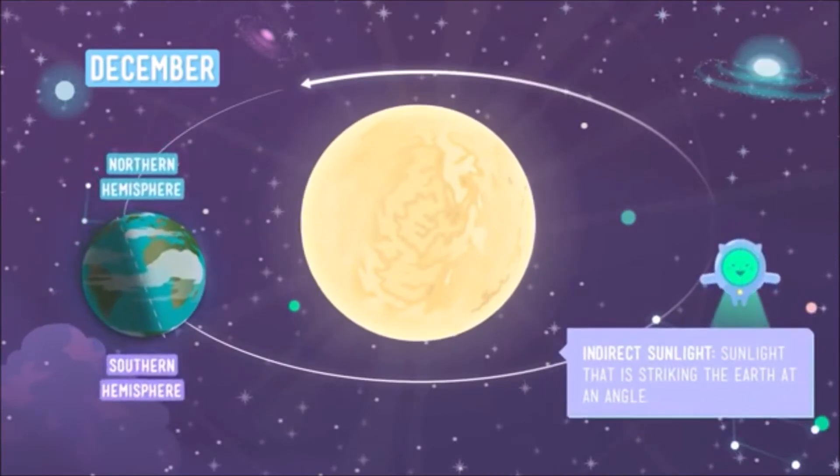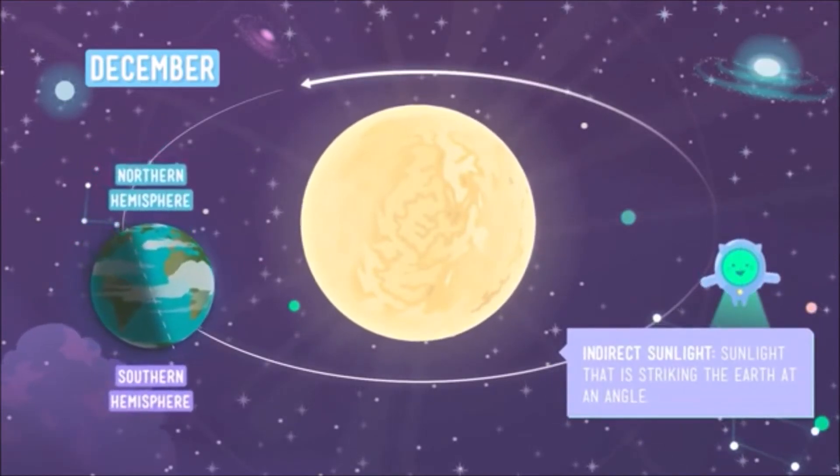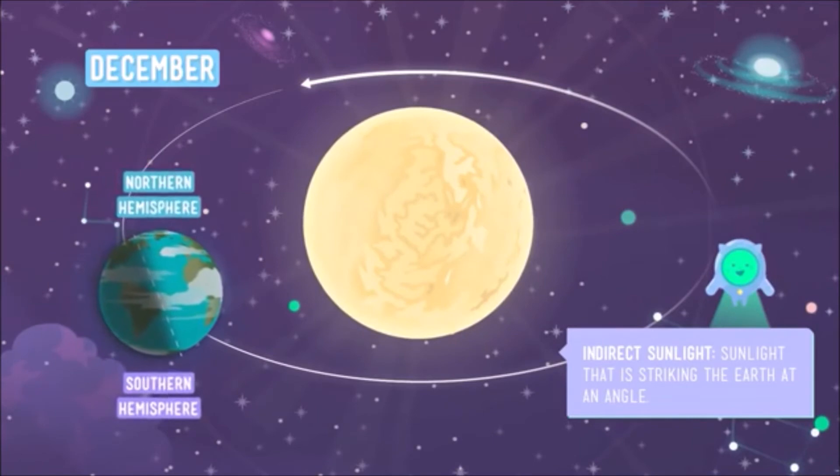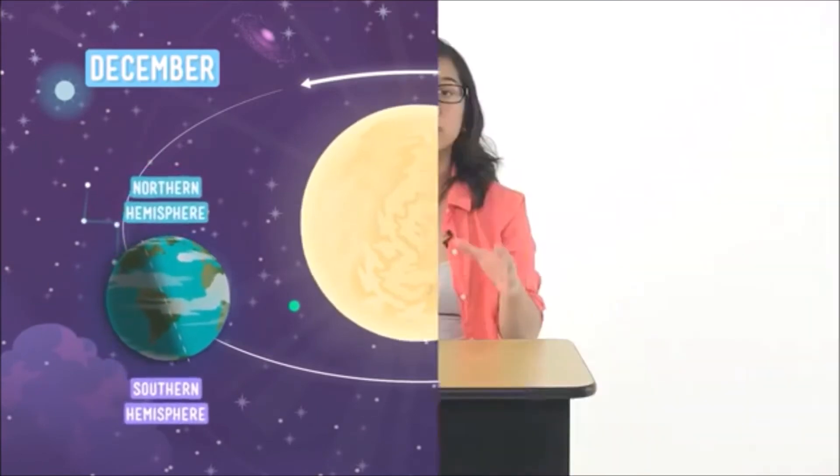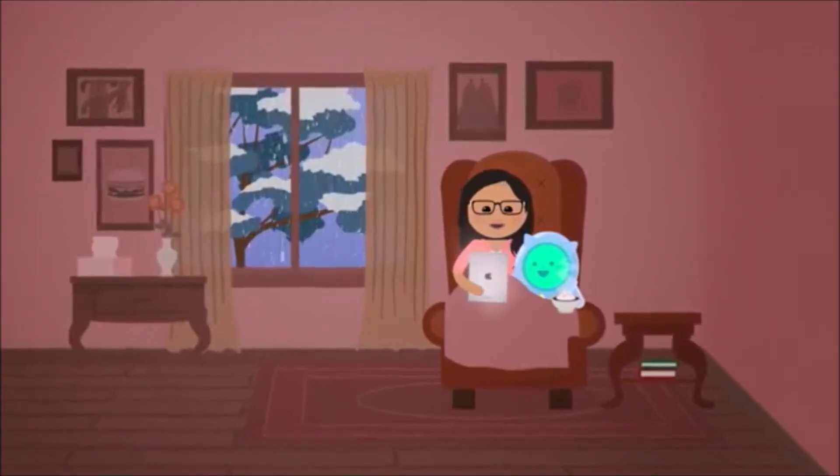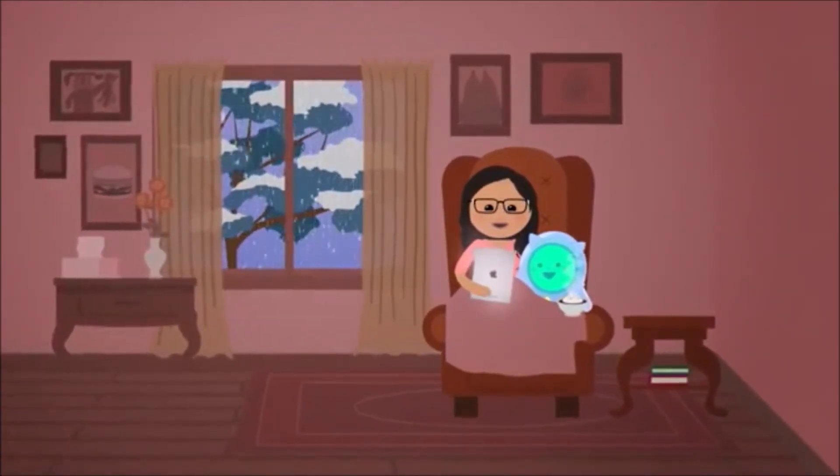In December, though, the northern hemisphere is tilted away from the sun. It's getting indirect sunlight, meaning light is hitting it at an angle. Indirect sunlight means cooler temperatures, shorter days, and, for lots of folks, hot cocoa and bundling up since it's winter.